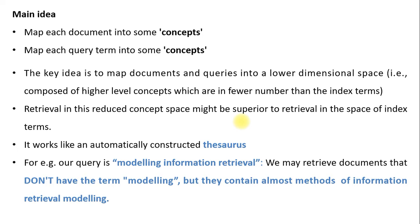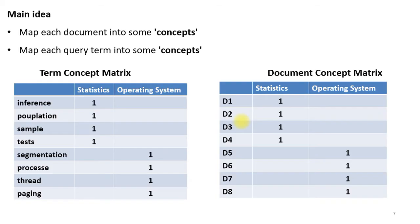Concepts come under the lower-dimensional space and keywords come under the higher-dimensional space. Retrieval in this reduced concept space might be superior to retrieval in the space of index terms — it works like an automatically constructed thesaurus. For example, if the query is 'modeling information retrieval', we may retrieve documents that don't contain the term 'modeling' but contain almost all methods of information retrieval modeling.